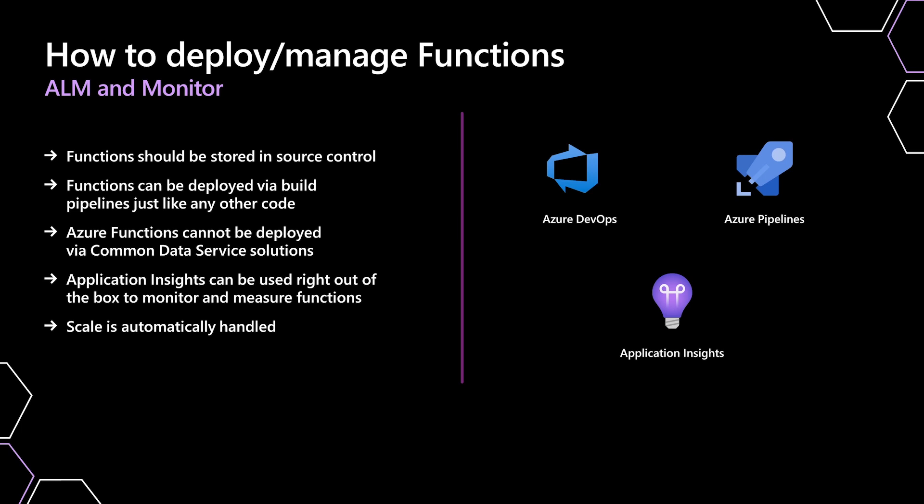One more thing to mention is Application Insights. All the functions have this straight out of the box — all your telemetry and logging ready to go. If you want an alert sent out when your function fails 100 times in five minutes, you can have those sorts of things built straight in. That's enough about functions — now let's bring them into the platform.